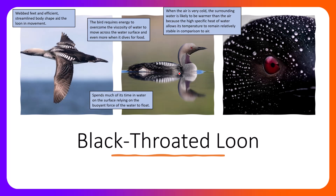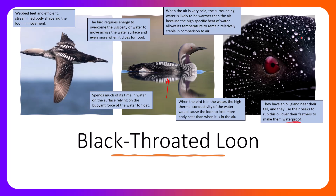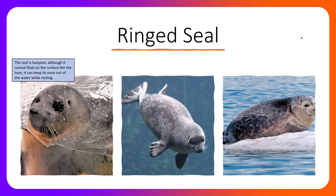The loon spends much of its time on the water surface, relying on the buoyant force of water to float. Because water has high buoyancy, it allows the loon to float on the surface without expending much energy. When the bird is in water, the high thermal conductivity of the water would cause the loon to lose more body heat than when it is in air. These birds have an oil gland near their tail that they use their beaks to rub and transfer oil all over their feathers, making them incredibly waterproof. When you look at these organisms in water, there is a lot of water beading — relating to cohesion and adhesion — which also means water doesn't penetrate the feathers, maintaining an air gap between the environment and the skin.